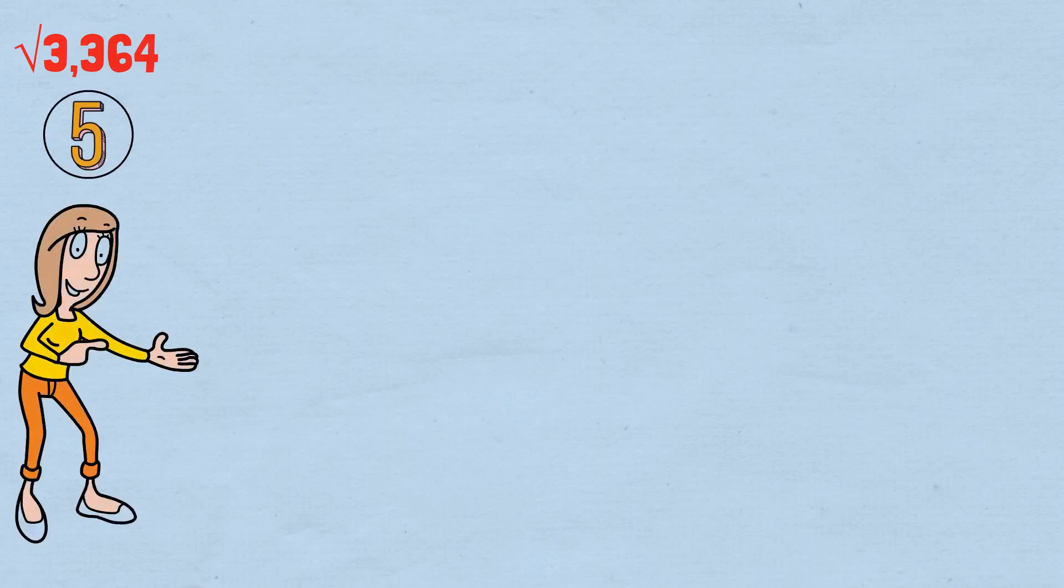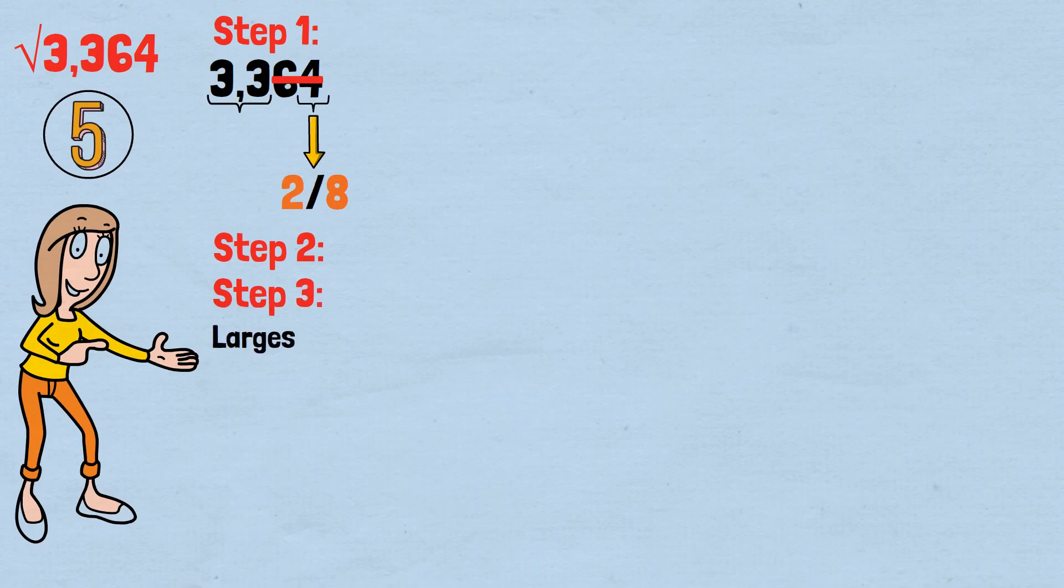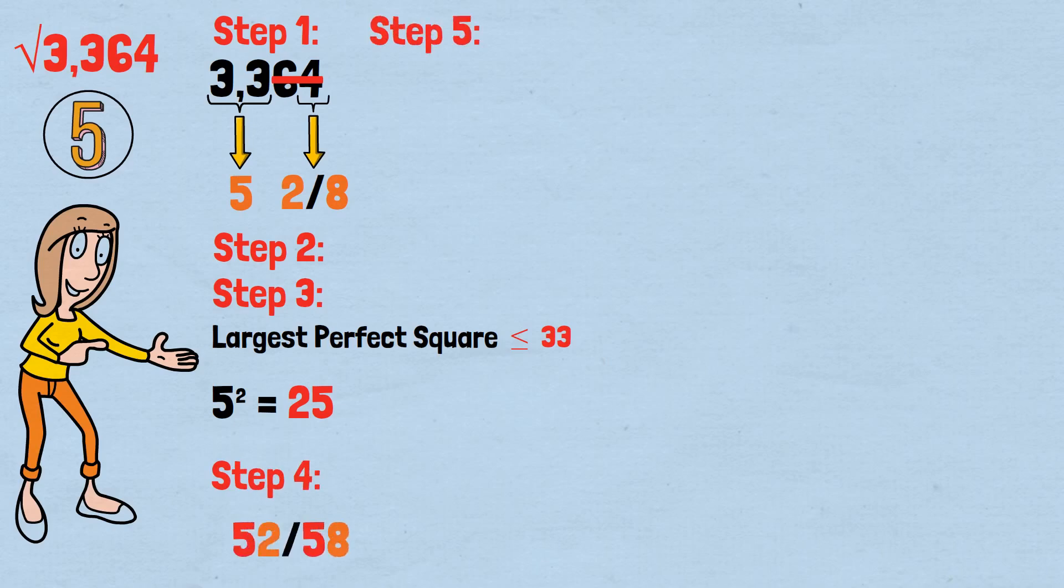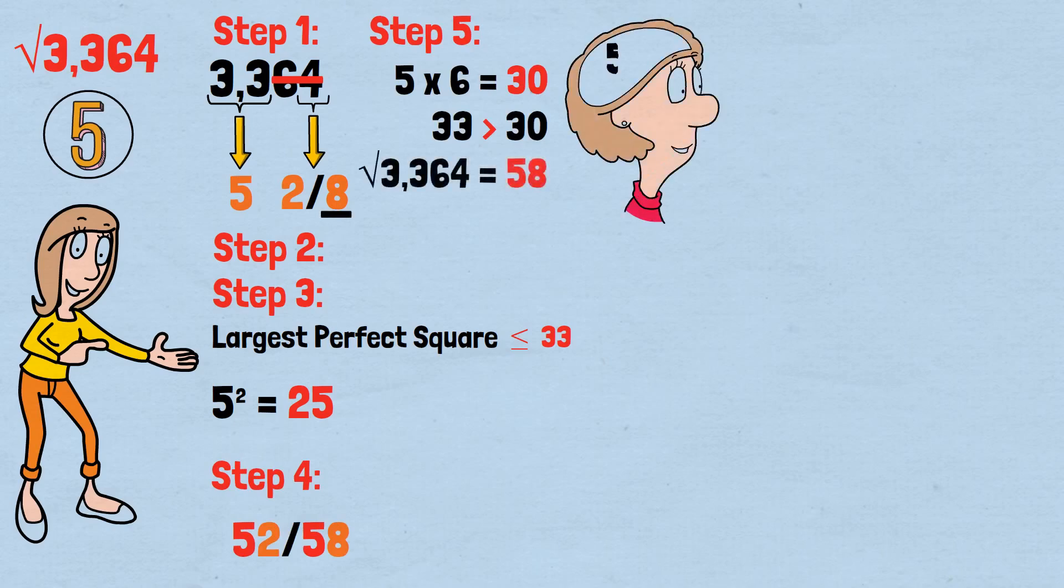Now let's return to our original challenge: finding the square root of 3,364 in 5 seconds. Let's apply our method. Step 1: Last digit is 4, so our answer ends in either 2 or 8. Step 2: Cross out 64, leaving us with 33. Step 3: Largest perfect square less than or equal to 33 is 25 equals 5 squared, so first digit is 5. Step 4: Candidates are 52 and 58. Step 5: 5 times 6 equals 30. Since 33 is greater than 30, we choose 8. Answer: 58. From start to finish, under 5 seconds, entirely in your head, with complete confidence in the result.